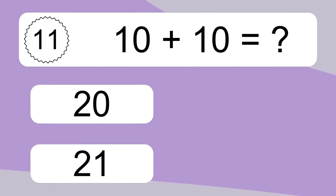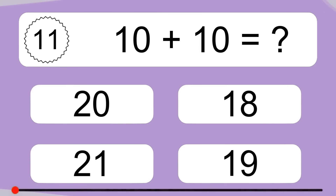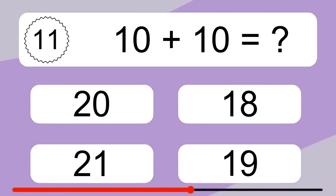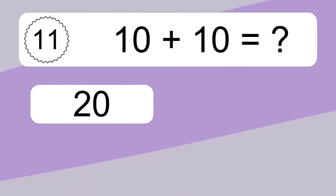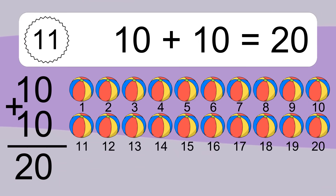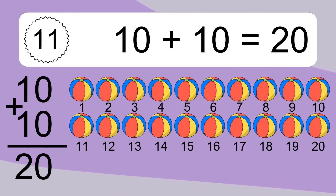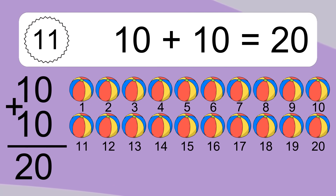10 plus 10 equals what? Let's count it: 1, 2, 3, 4, 5, 6, 7, 8, 9, 10, 11, 12, 13, 14, 15, 16, 17, 18, 19, 20.